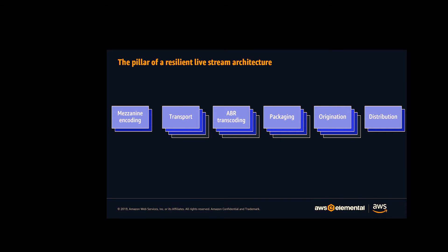The traditional way of making live streaming workflows more resilient is to duplicate those steps — having multiple components or pieces of infrastructure doing every step along that chain, and then having failover be switching from one set of components to another. What the cloud gives you is an interesting way of looking at it: instead of having entire legs as A and B with failover switching between them, you think about failover within individual steps along that workflow. You can build something that's a lot more resilient than a traditional A and B leg architecture.